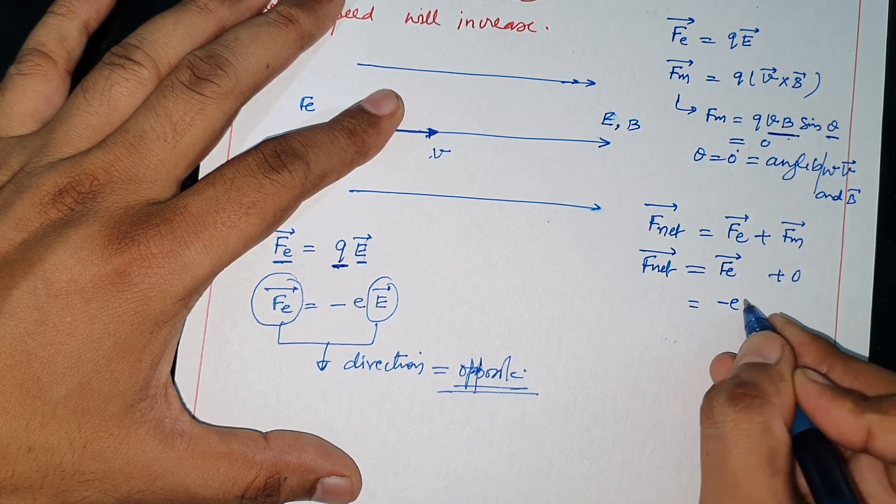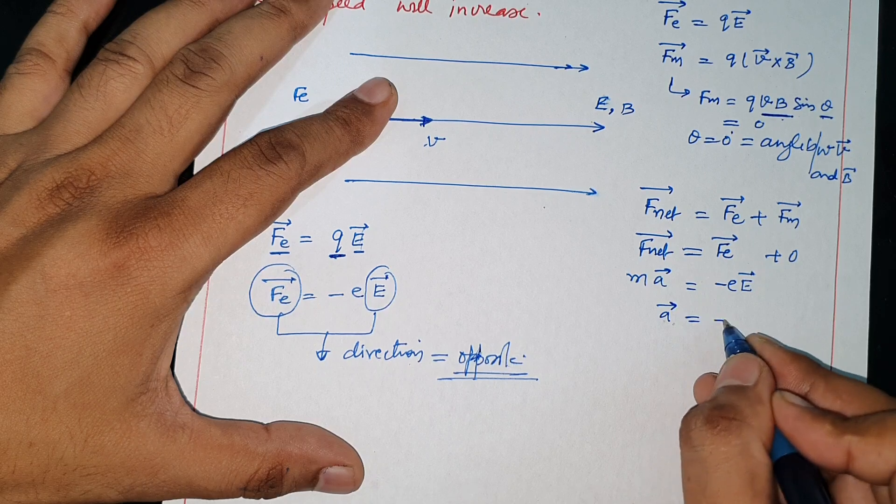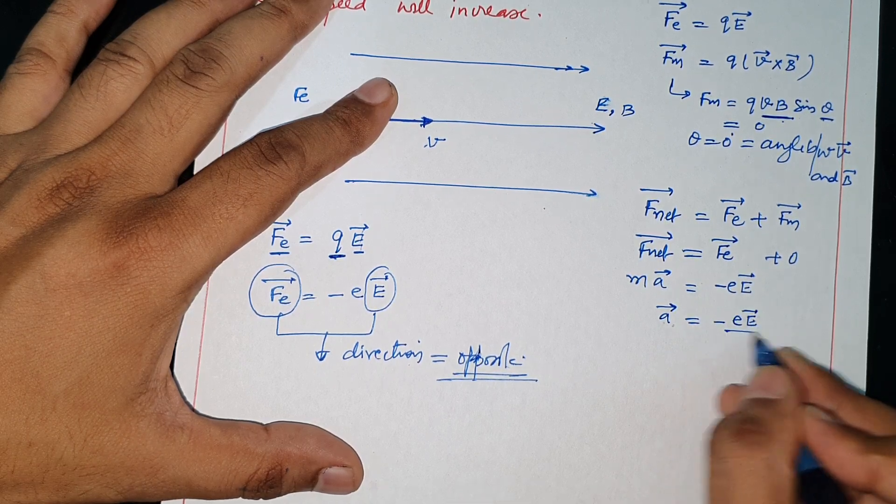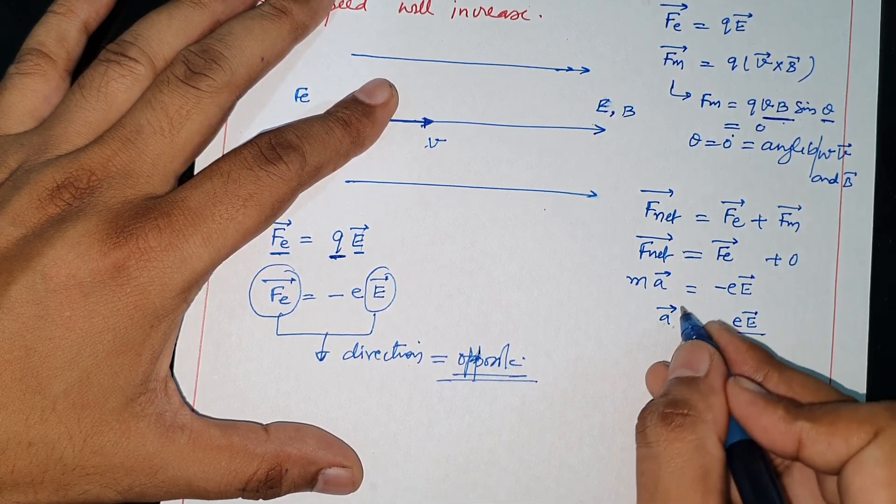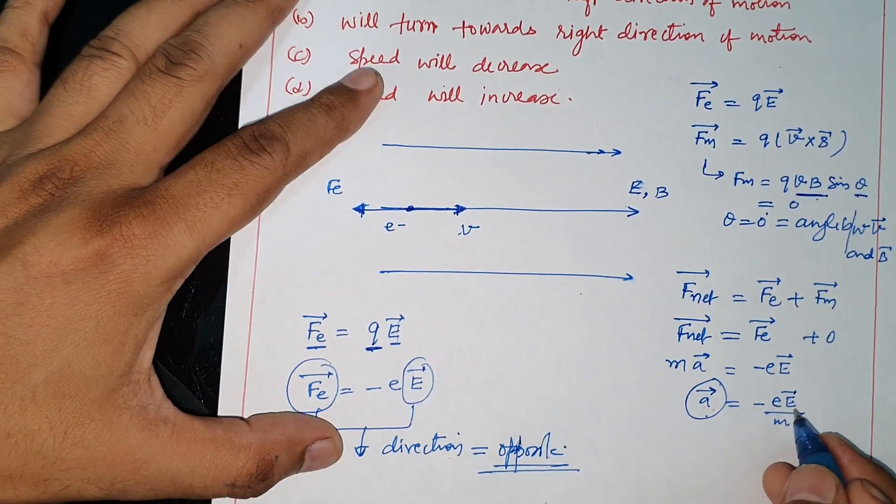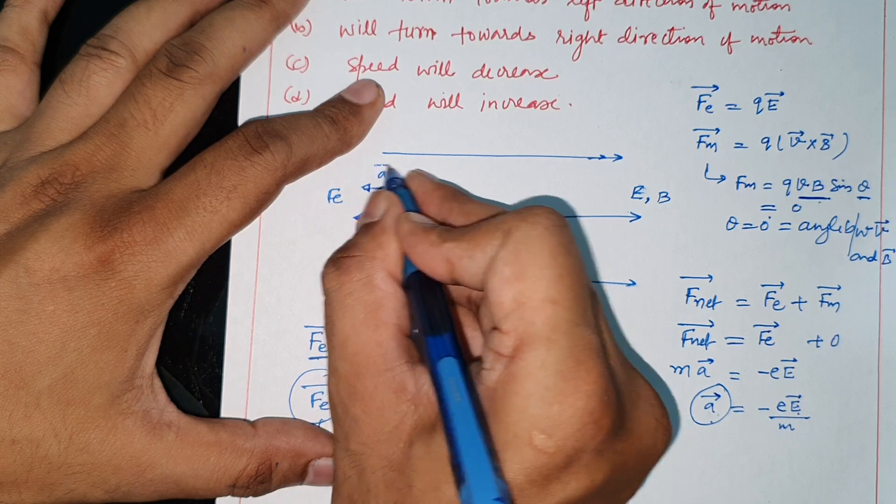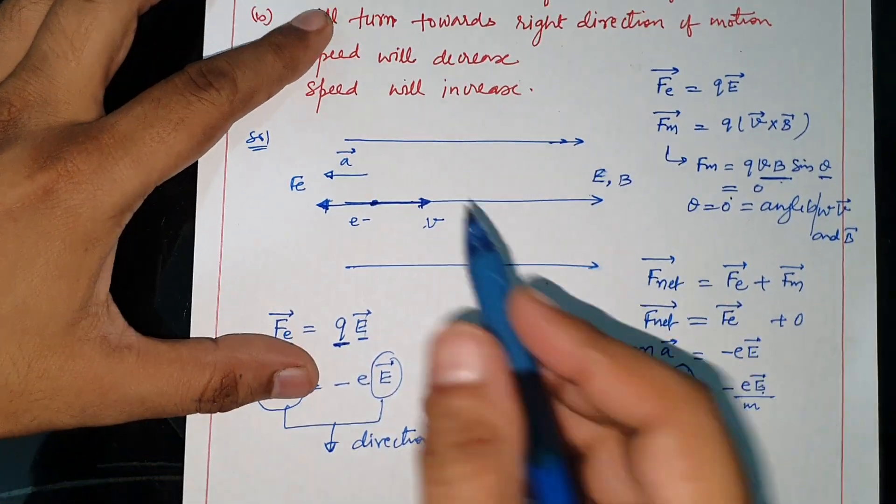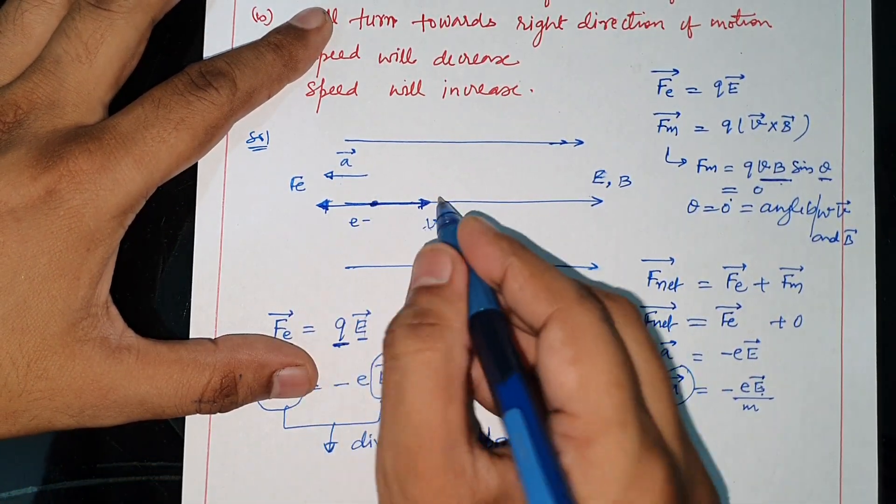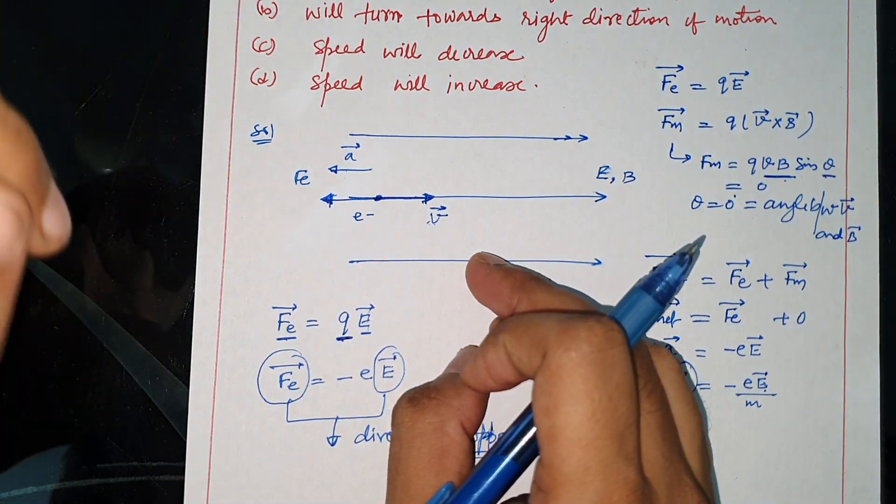F_e vector equals mass into acceleration, so a vector equals -eE vector upon m. The acceleration which is developed is in the electric field opposite direction. That means acceleration and velocity are in opposite directions, so speed will decrease and there is retardation.